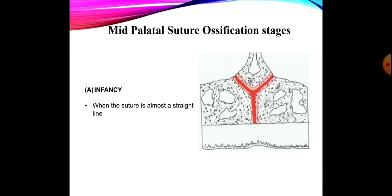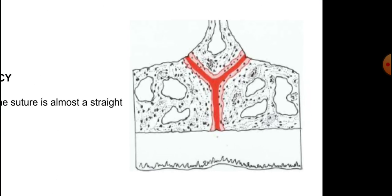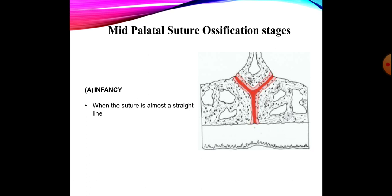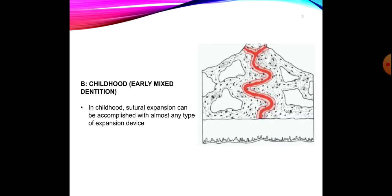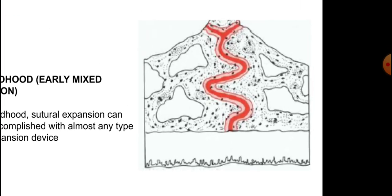Stage one is at infancy. Stage two is early childhood or early mixed dentition. Stage three is late mixed dentition or pre-adolescence age. Stage four is late teens. In infancy, if we look at the suture, we see that it is just like a straight line, showing that the suture has not started to ossify and there are no interdigitations. At this stage no palatal expansion is needed.